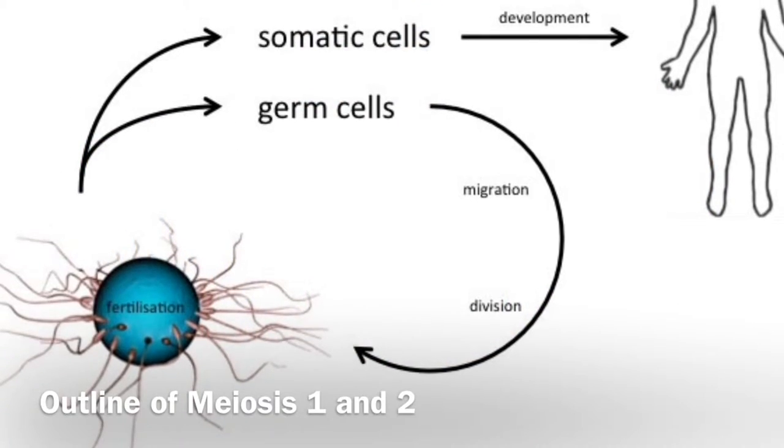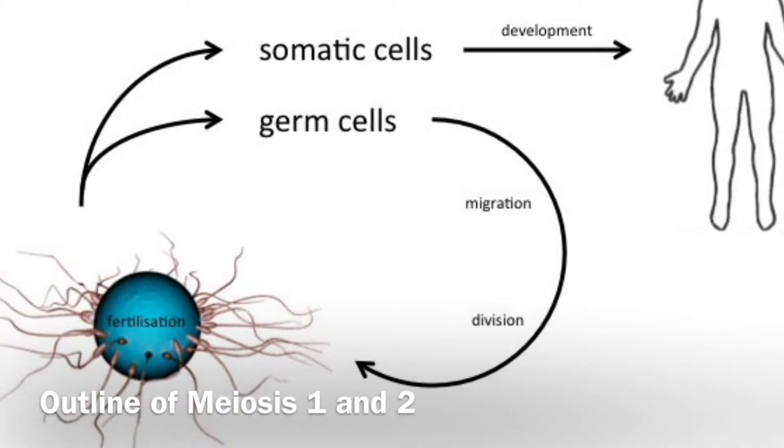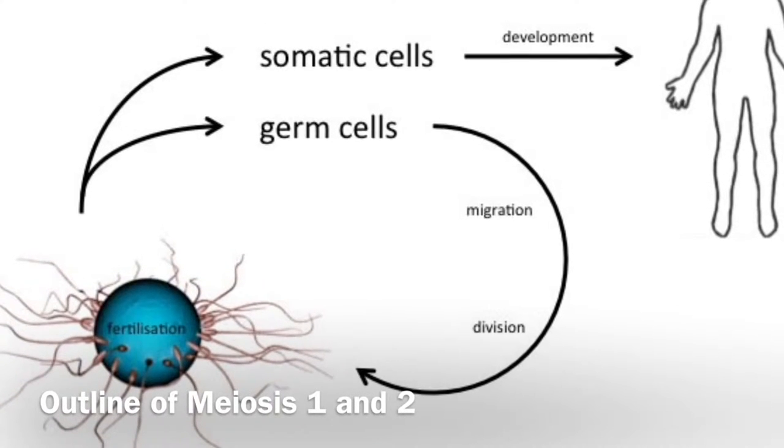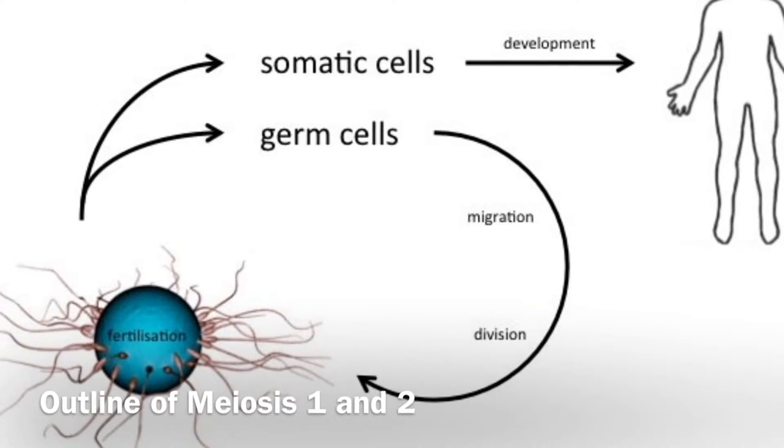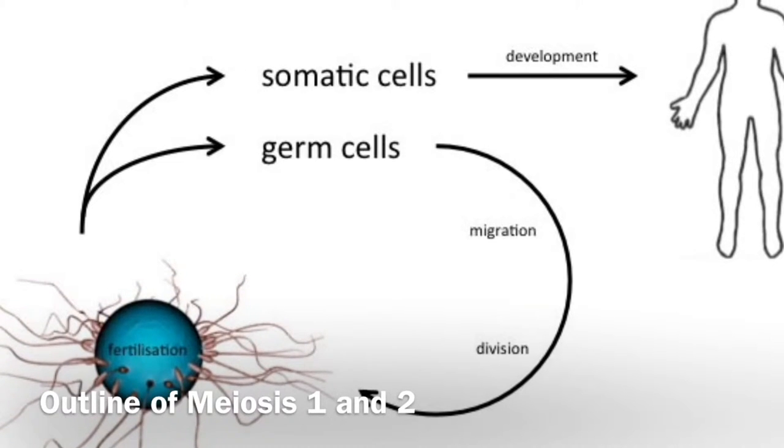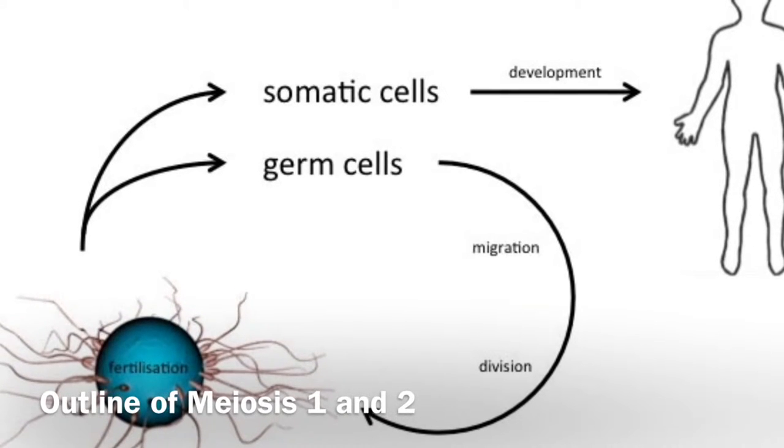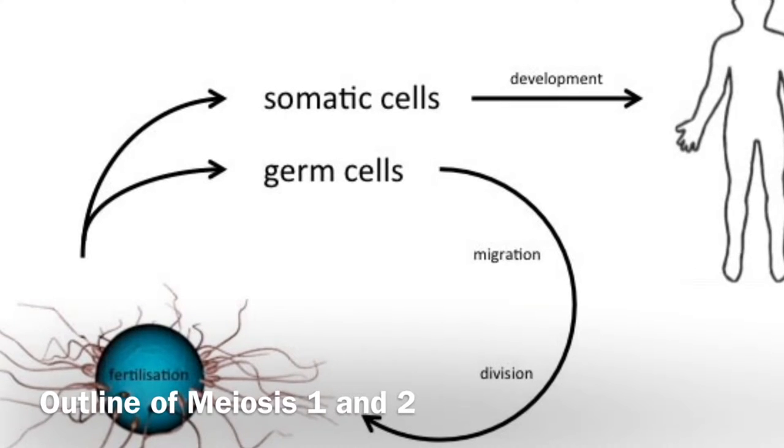Meiosis I results in two unique daughter cells that have half the amount of DNA as the germline cell. Meiosis II results in four unique haploid cells that only have one copy of each chromosome, and these haploid cells are the gametes that can produce an offspring through sexual reproduction.